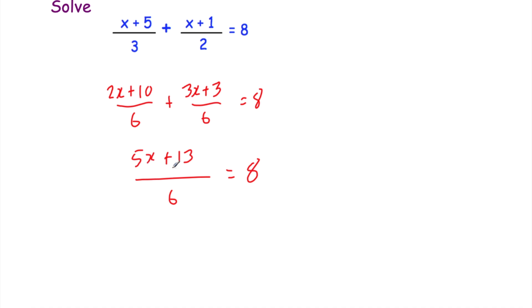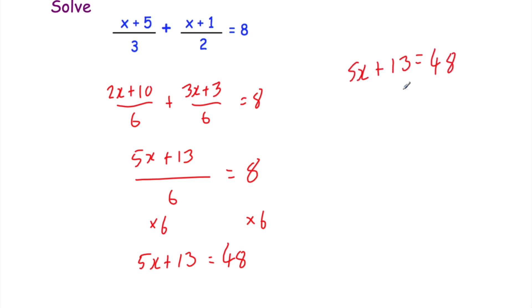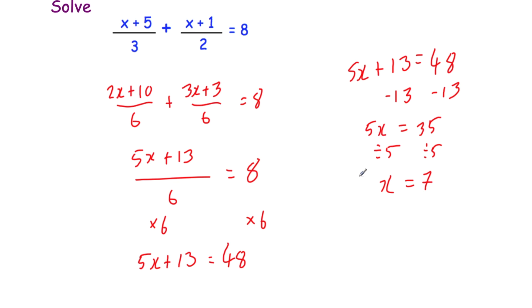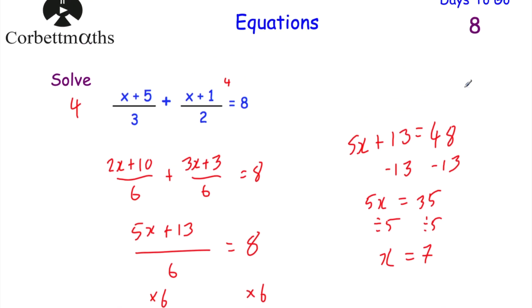Now we want to find x, so let's get rid of the divide by 6 by multiplying both sides by 6. That gives us 5x + 13 = 48. Taking away 13 from both sides gives 5x = 35, then dividing by 5 gives x = 7. Let's check: 7 + 5 = 12, divided by 3 is 4; and 7 + 1 = 8, divided by 2 is 4; 4 + 4 = 8. That works! If you got that, well done.